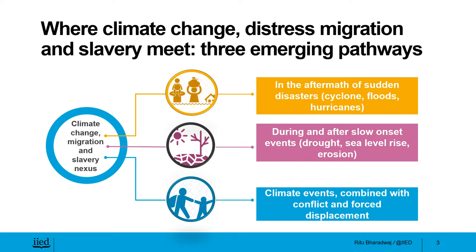Very strong evidence exists indicating that human trafficking increases in the aftermath of such events. For example, in Bangladesh, women who were left widowed by Cyclone Sidr were targeted by traffickers and driven into prostitution and hard labor. Similarly, following the annual flooding in Assam in Northeast India, women and girls were forced into slavery and marriages to make ends meet.